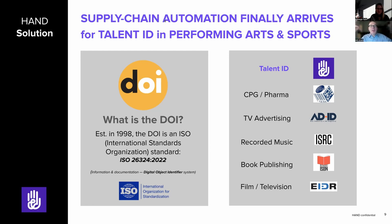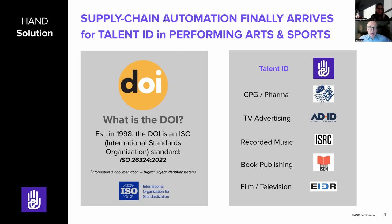The headline: supply chain automation finally arrives for talent identity in performing arts and sports. HAND Human and Digital is developing a talent identifier to bring supply chain automation to performing arts and sports at a global, interoperable level — allowing companies around the world to have a trusted identifier, like a Dun & Bradstreet number, tied to a chain of custody confirming who you're dealing with, issued based on attribution and attestations of authenticity.